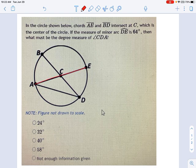Let's see what we're given. Line AE and line BD intersect at C, which is the center of the circle. That's useful information. We're also told that minor arc DE is 64 degrees. We're given that right there.